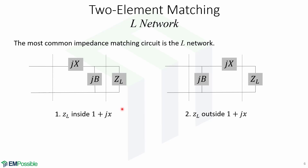The first configuration is when the normalized load impedance is located inside the 1 + jx circle — in this case the matching network is going to look like this. The second option is when the normalized load impedance lies outside of the 1 + jx circle, and thus the network is going to look like this.